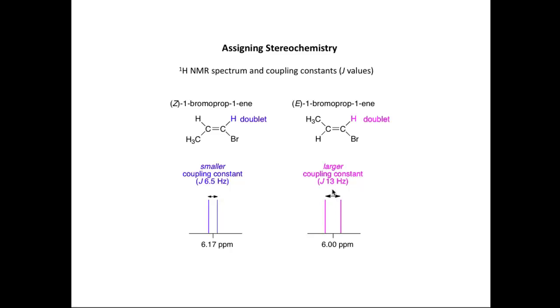If we look at the E isomer now, and we measure the distance between the two lines in the doublet, you'll see it's larger, approximately twice the size of J value, 13 Hz. So by measuring the distance between the two lines in the doublet signals, we can determine whether we have a Z or whether we have an E alkene. And this is a very common and popular way for assigning the stereochemistry of alkenes.